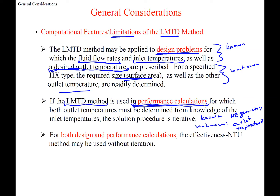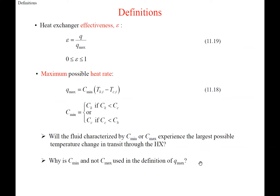The NTU method works for both design and performance calculations without requiring iteration. If you're unsure which method to use, the NTU method works for either case. We need to define two key quantities: effectiveness and NTU. Effectiveness is Q actual over Q max — the ratio of actual heat transfer to the maximum possible — so it ranges from 0 to 1.